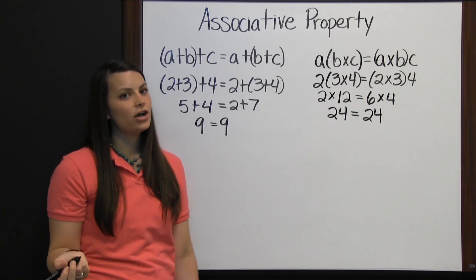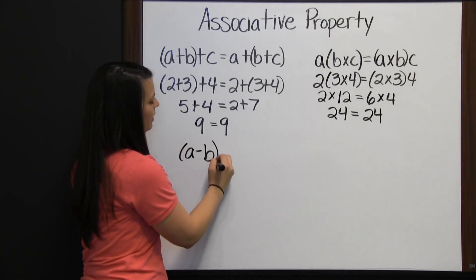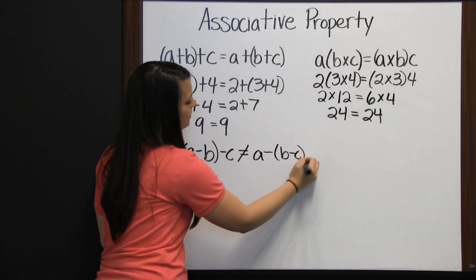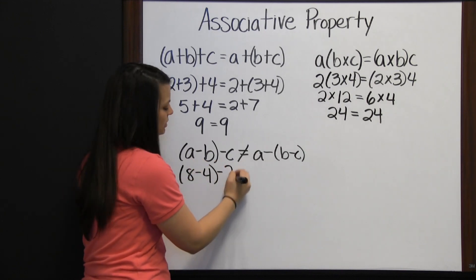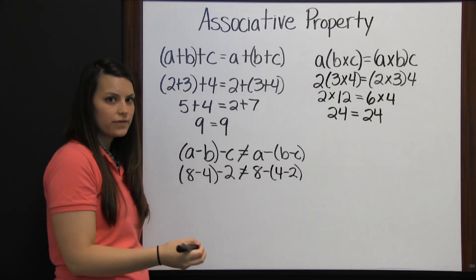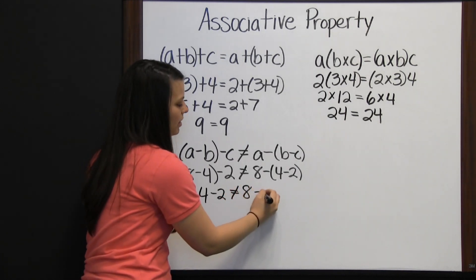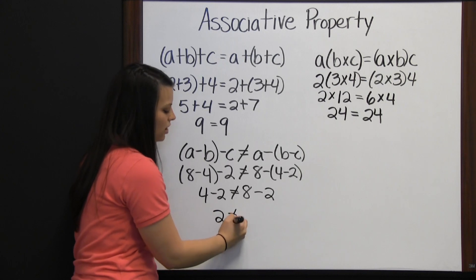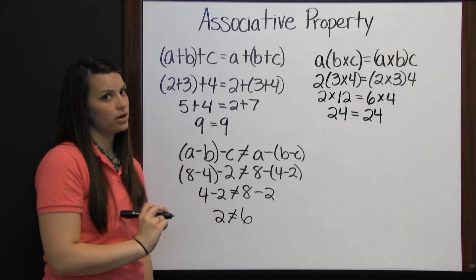Let's look at what happens when we try to use it on subtraction and division. If we try to use the associative property on subtraction, it would look like a minus b minus c, but it's not going to be equal to a minus b minus c. Using numbers: 8 minus 4 minus 2 does not equal 8 minus 4 minus 2. Using order of operations, 8 minus 4 is 4, minus 2 does not equal 8 minus 4 minus 2, which gives 2. 4 minus 2 is 2, and that does not equal 8 minus 2, which is 6. The associative property does not work on subtraction.